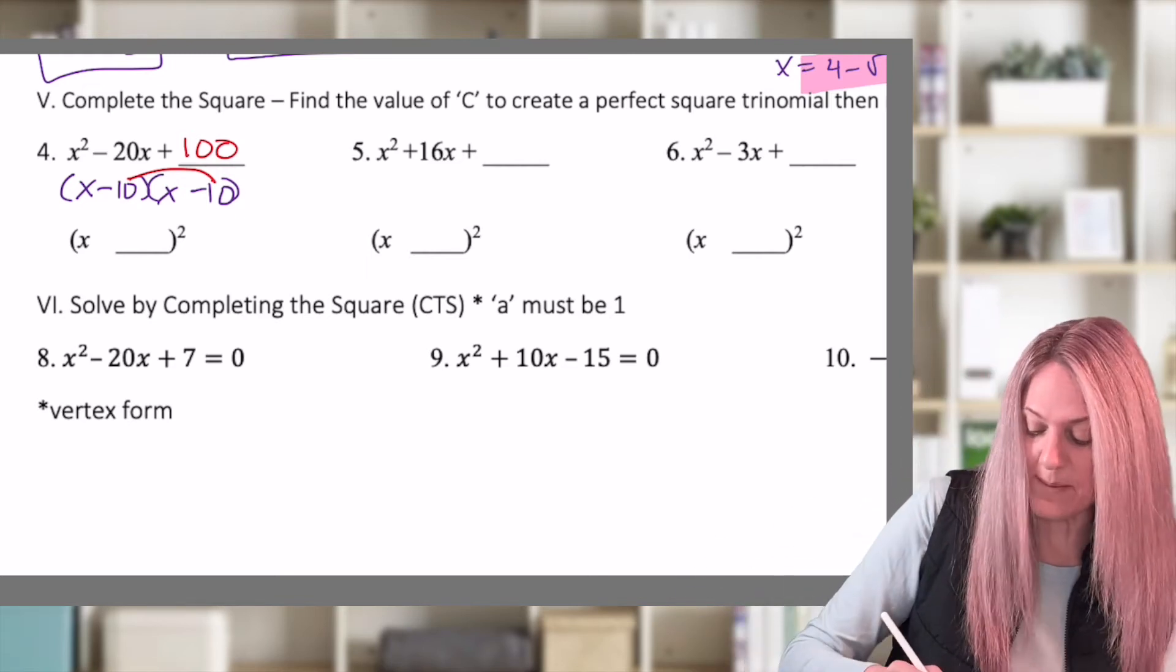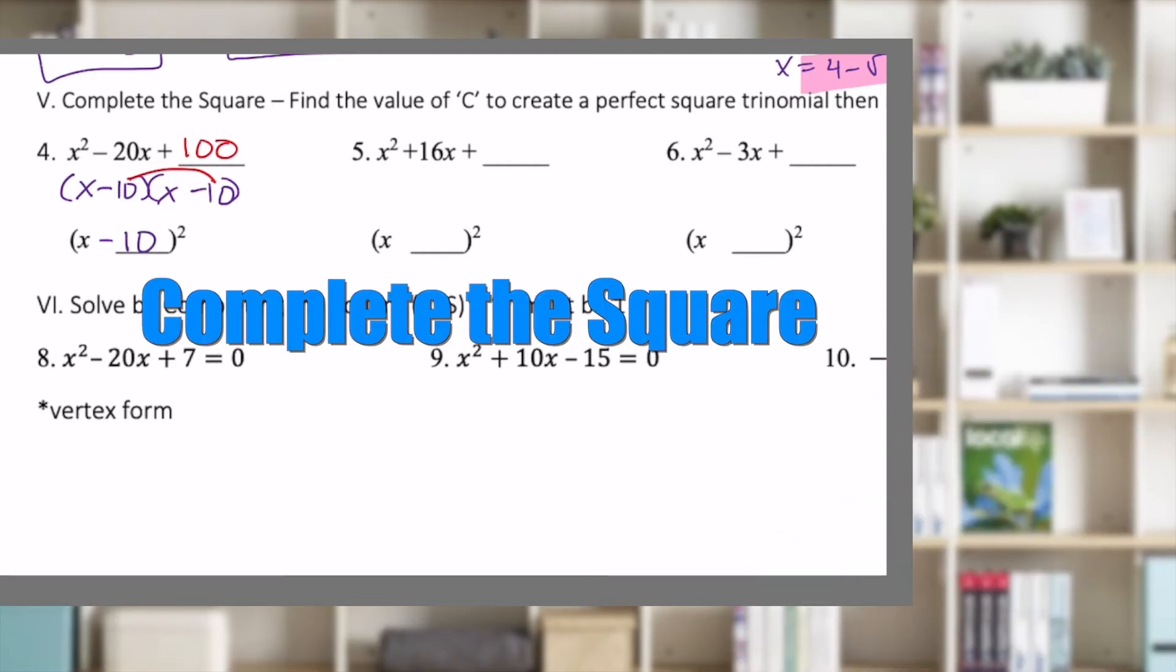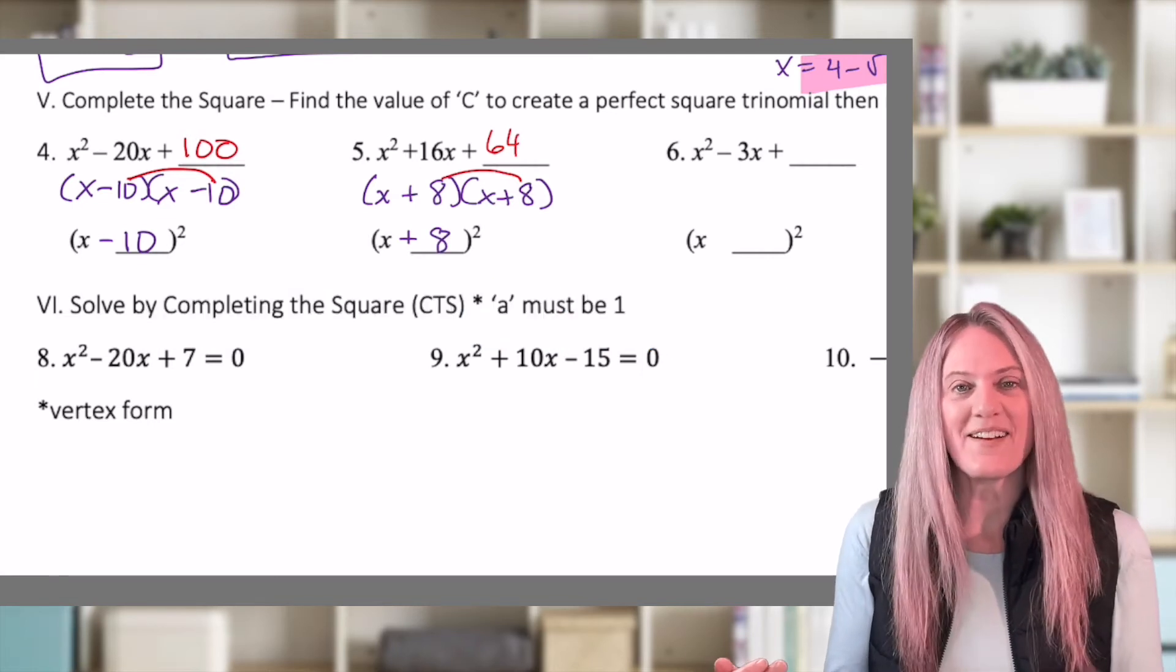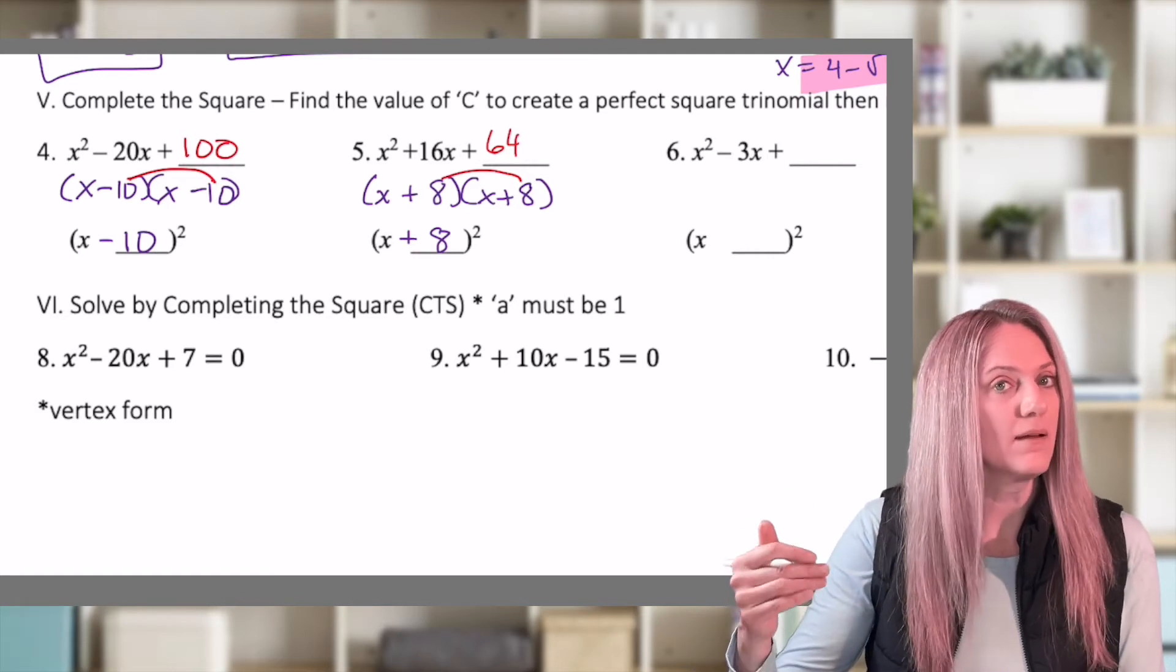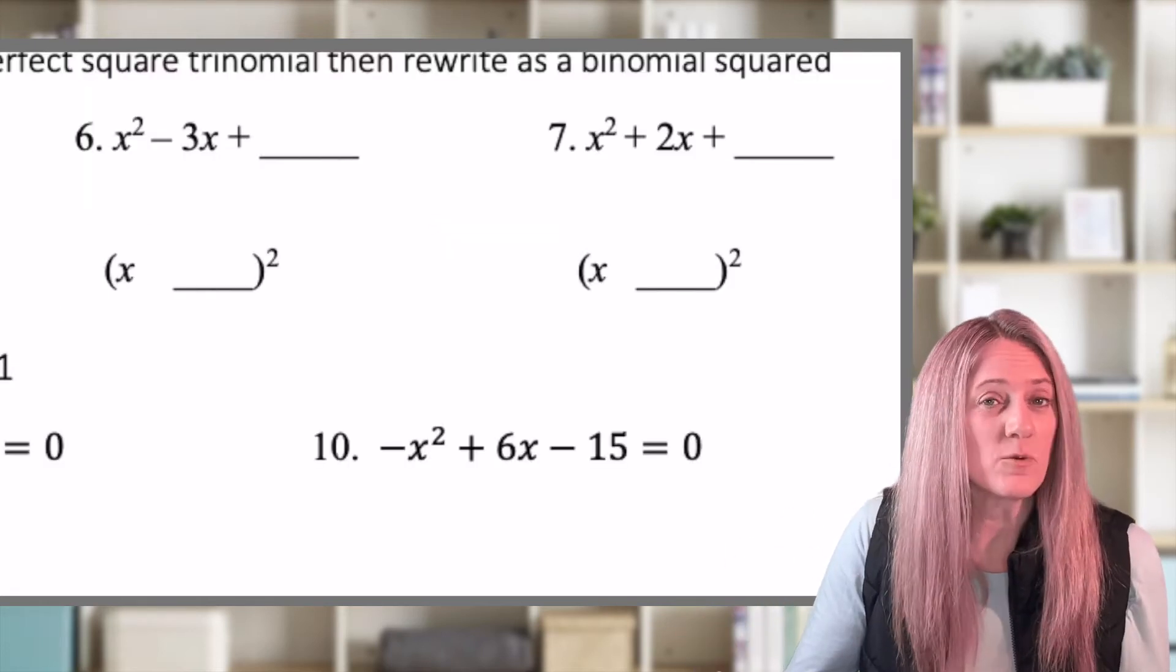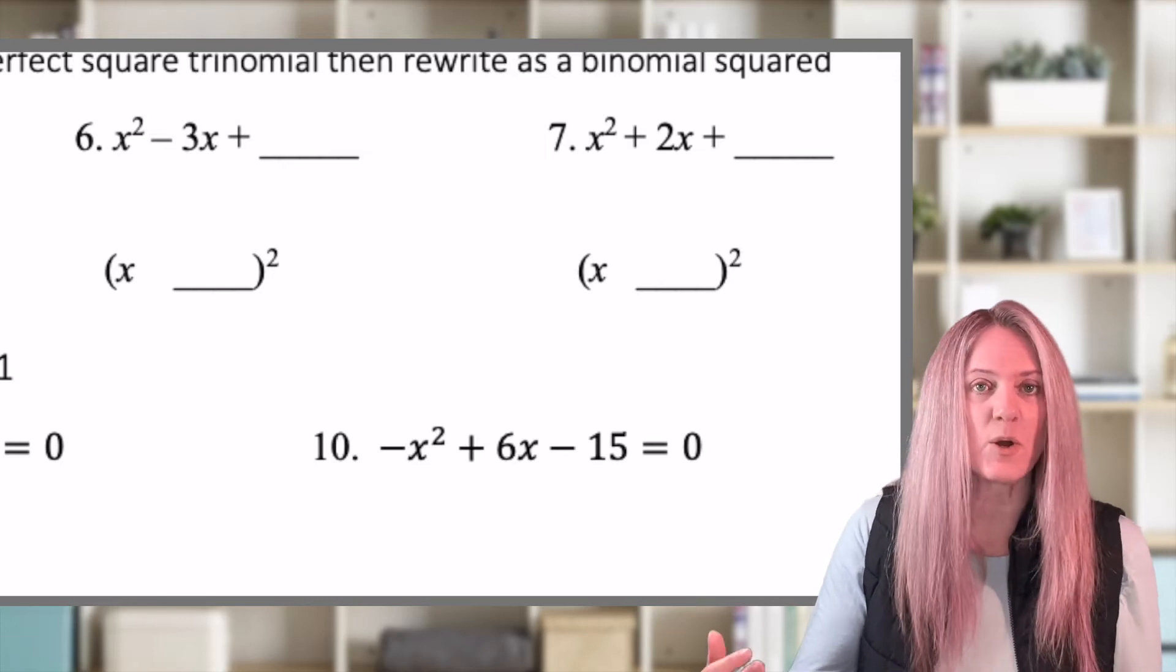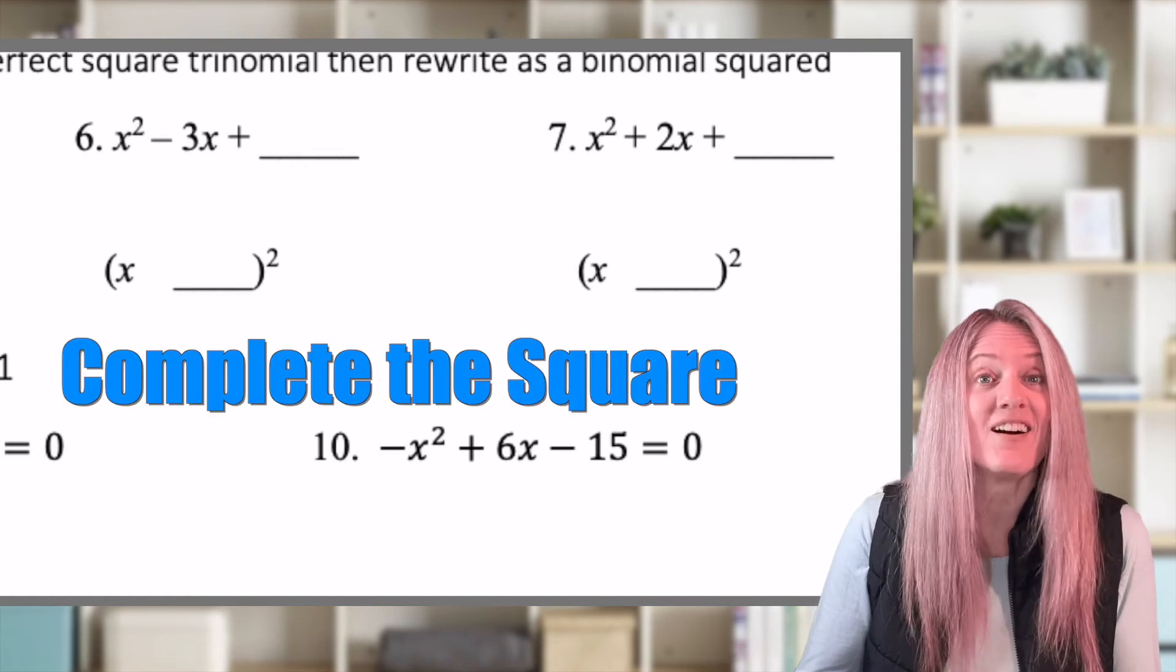That, of course, now collapses into x minus 10 quantity squared. The next one is all you. All right. x plus 8 quantity squared. And, of course, that c value was 64 because it was half of b, 8, squared. 8 times 8, 64. You probably have it already, but practice makes perfect. So go ahead and do 6 and 7. And the only thing a teeny bit tricky is you're going to have a fraction on number 6.